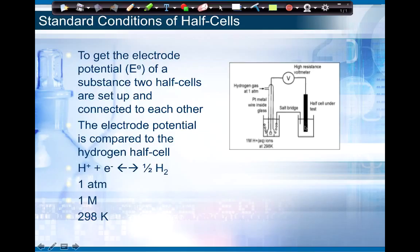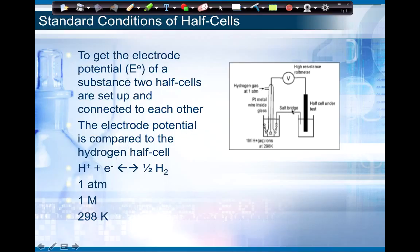We connect the two half cells together with a wire and also with a salt bridge, which we'll talk more about later. That potential is measured with the voltmeter. We always measure it with the hydrogen cell because the hydrogen cell is set at zero. We always have standard conditions: this is indicated by the little degree symbol. In this case it's one atmosphere of pressure since we have a gas, one mole per liter for our solutions in both vials, and 298 Kelvin. These are the standard conditions, and this is how the electric potential is measured.